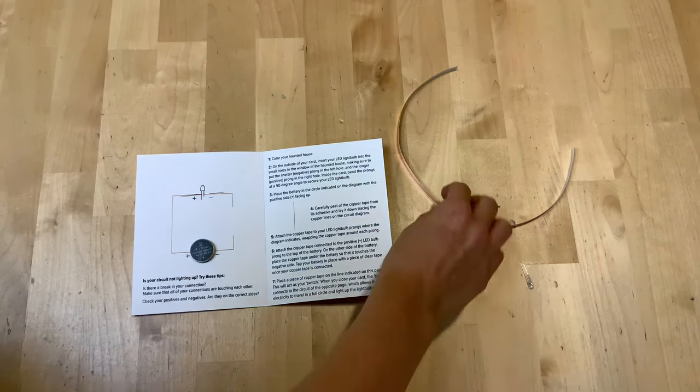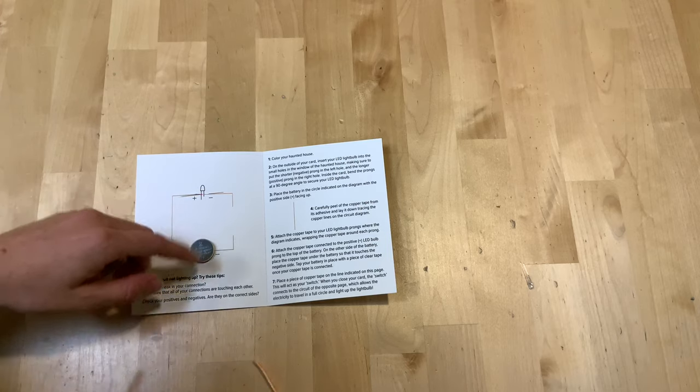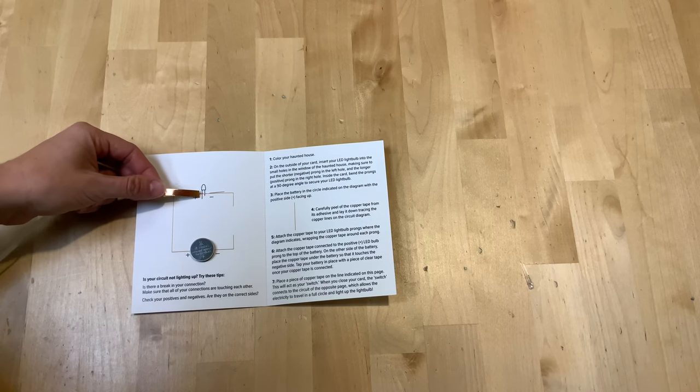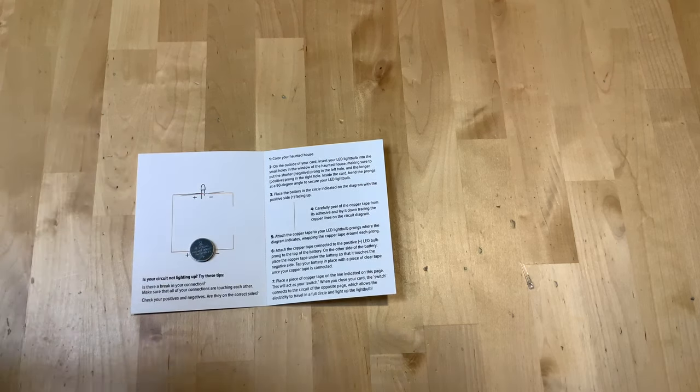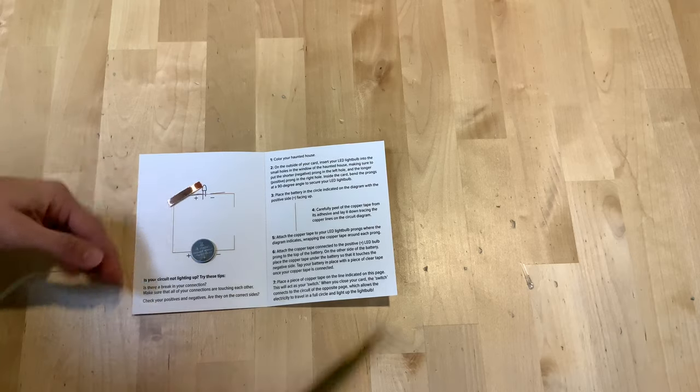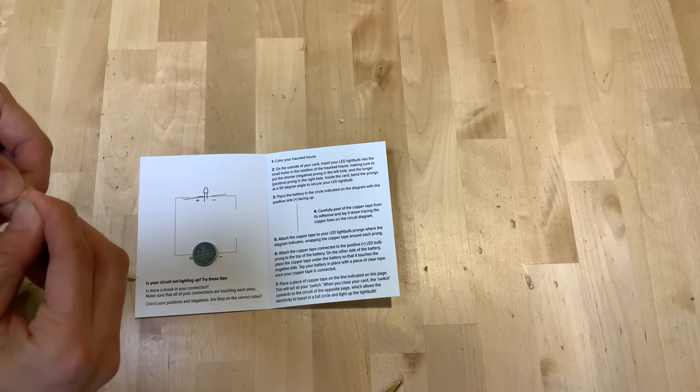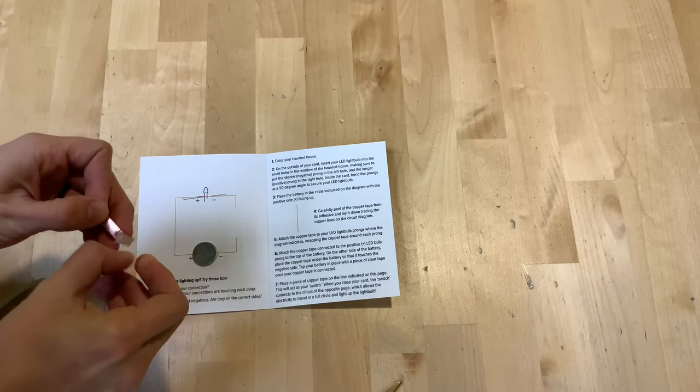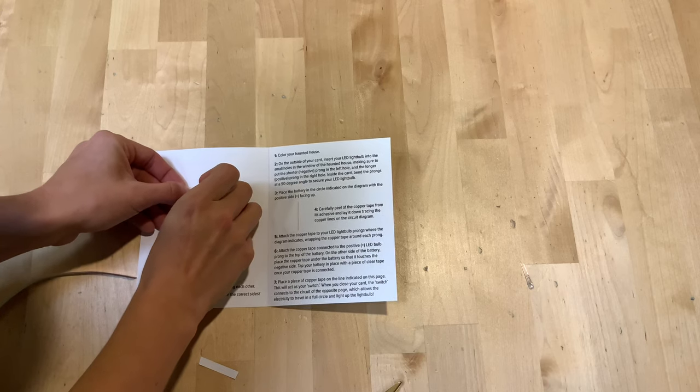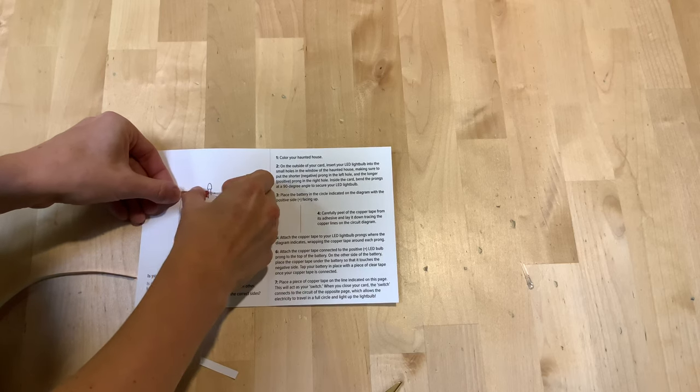Next we're going to carefully peel some copper tape from its adhesive and lay it down tracing all of the copper lines in the circuit diagram. We want to attach the copper tape to our LED light bulb prongs where the diagram indicates, wrapping the copper tape around each prong or just laying it on top of it. This stuff is real sticky and likes to curl on itself so it's good to cut it shorter. Okay, so that's completely covering that negative prong.